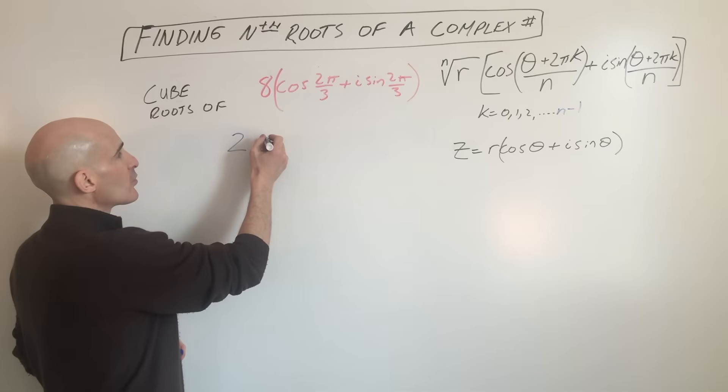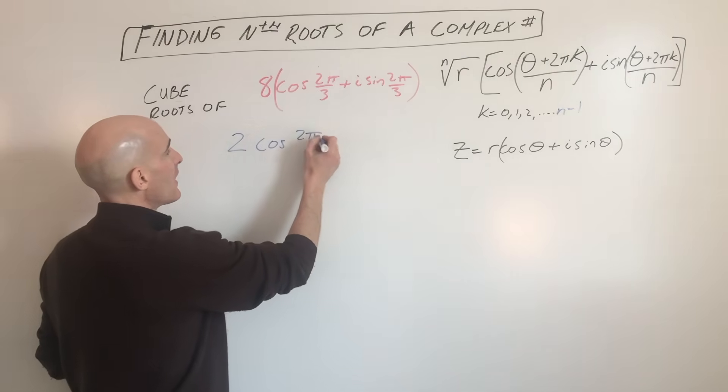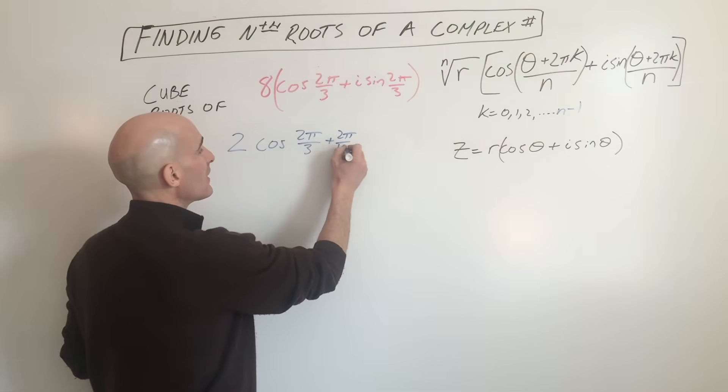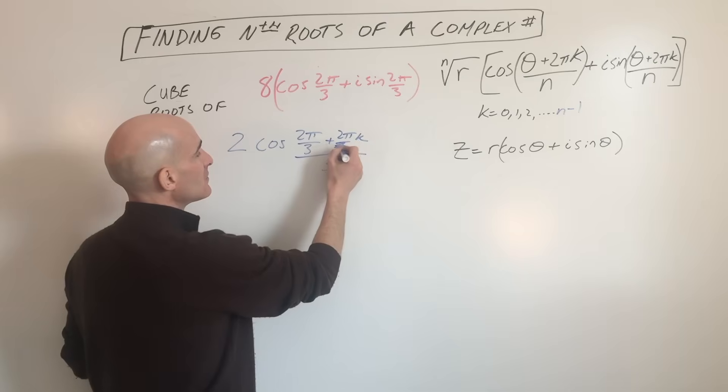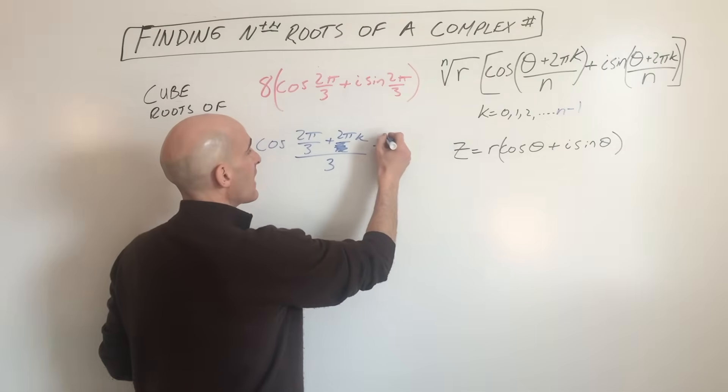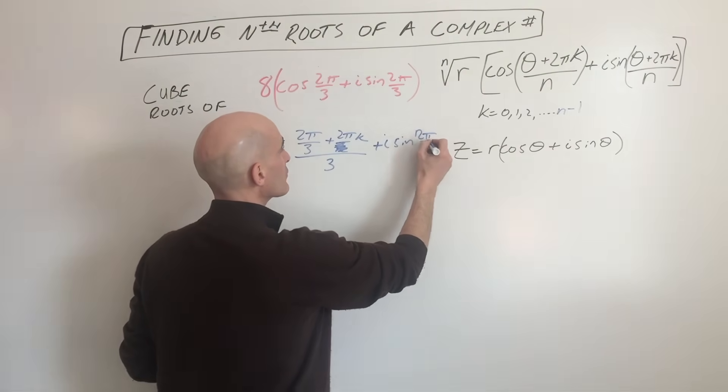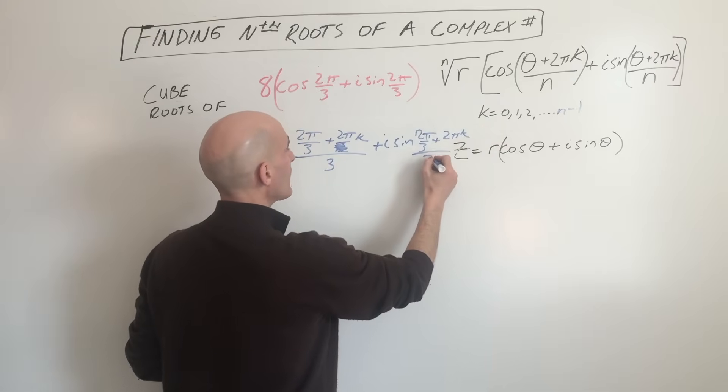And then what we're going to do is we're going to take the cosine of 2π/3 plus 2πk, all divided by, in this case, 3, because we're taking the cube root, plus i sine 2π/3 plus 2πk, all divided by 3.